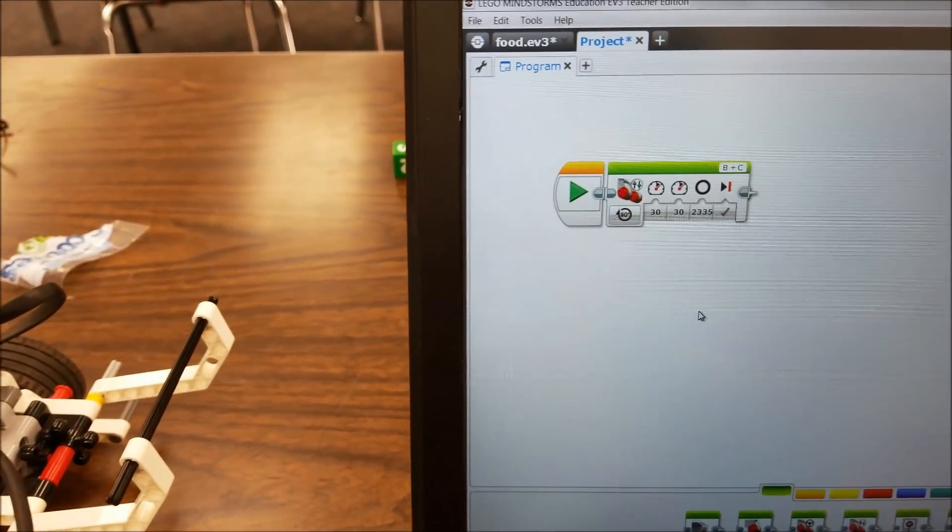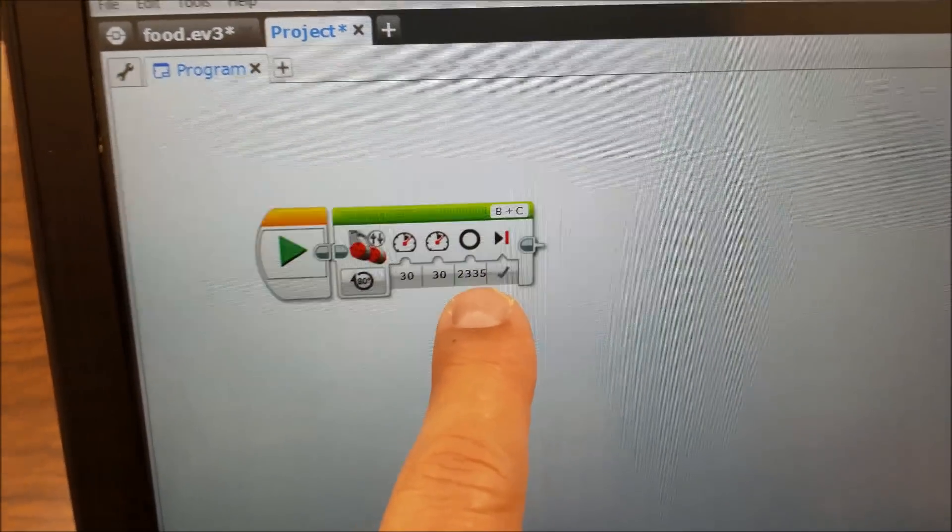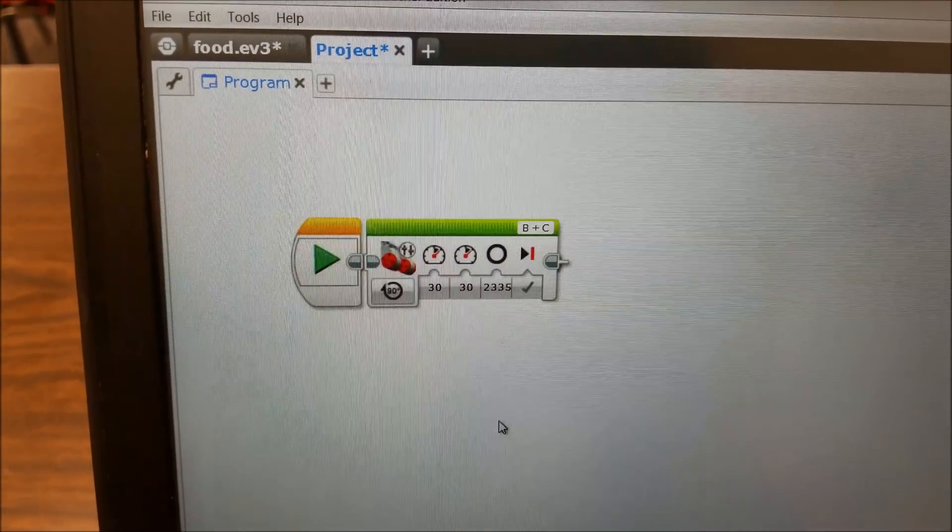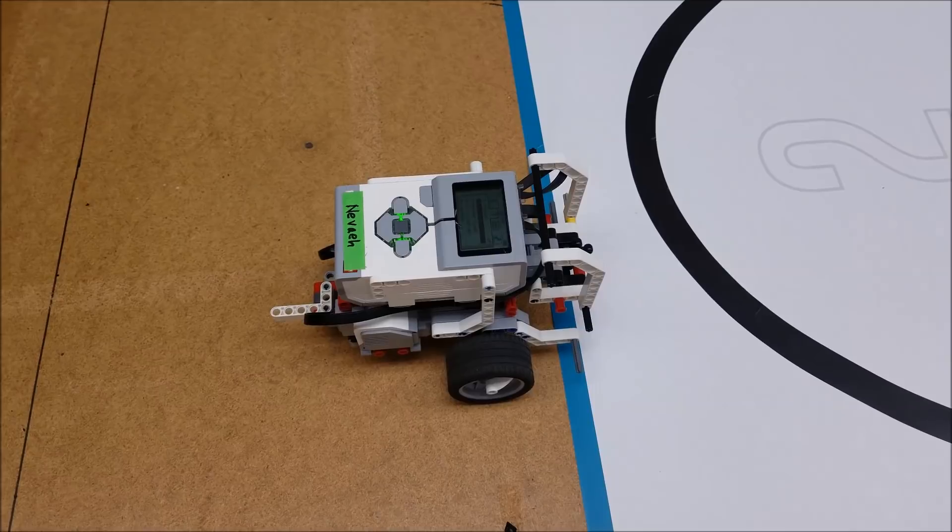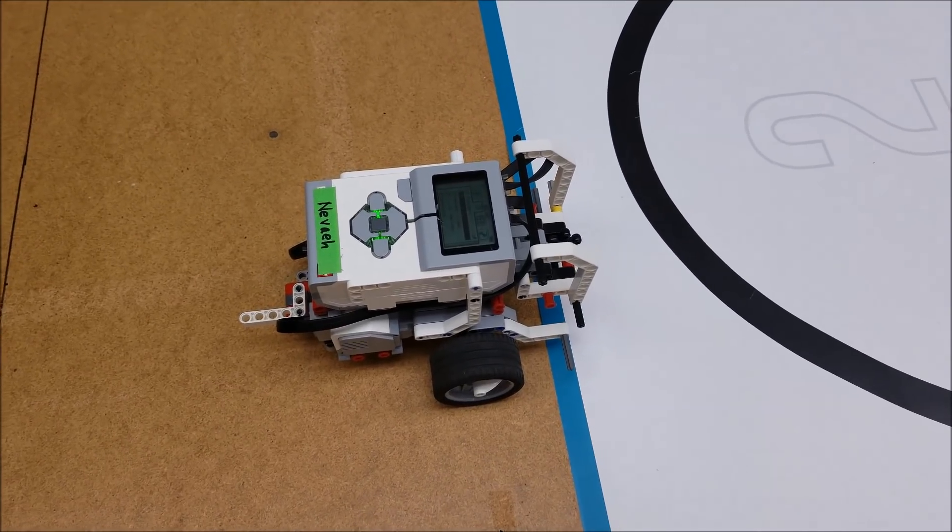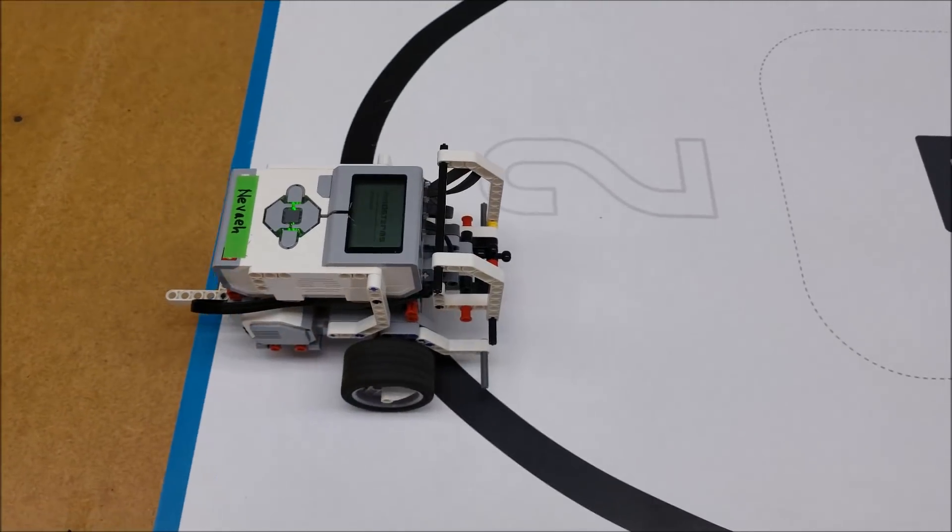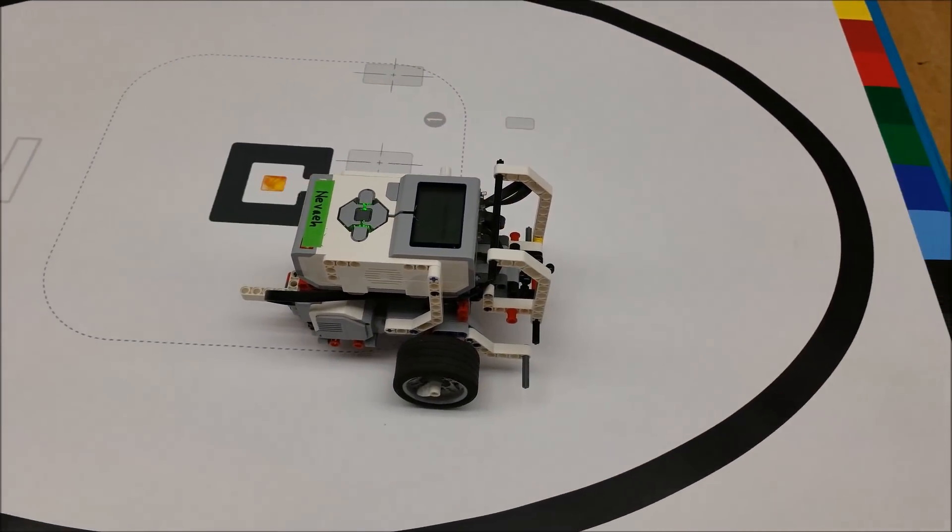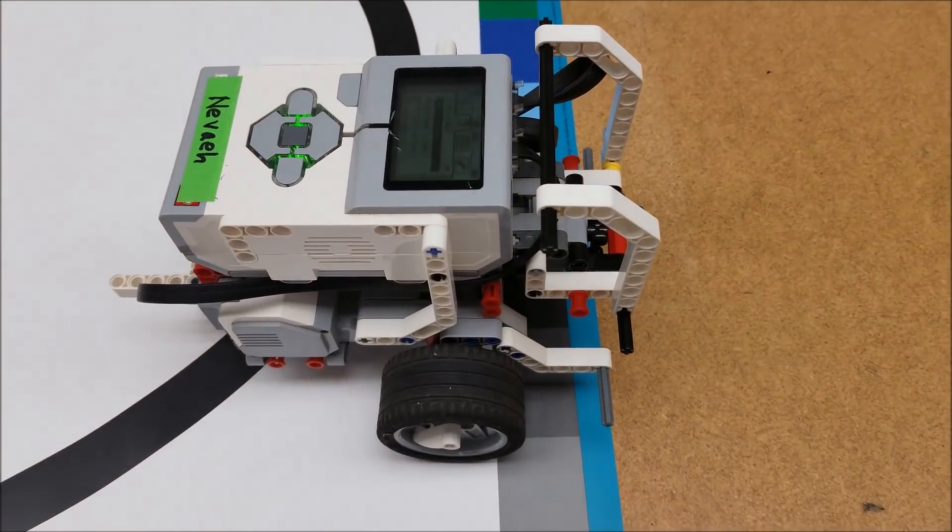Okay, I'm here at my laptop, and it was just a single move tank block. So there's my move tank block. There's the 2,335 degrees. Let's download that and get back to the board. Okay, the program has been downloaded. Let's go ahead and check and see how accurate that was. And there you have it.